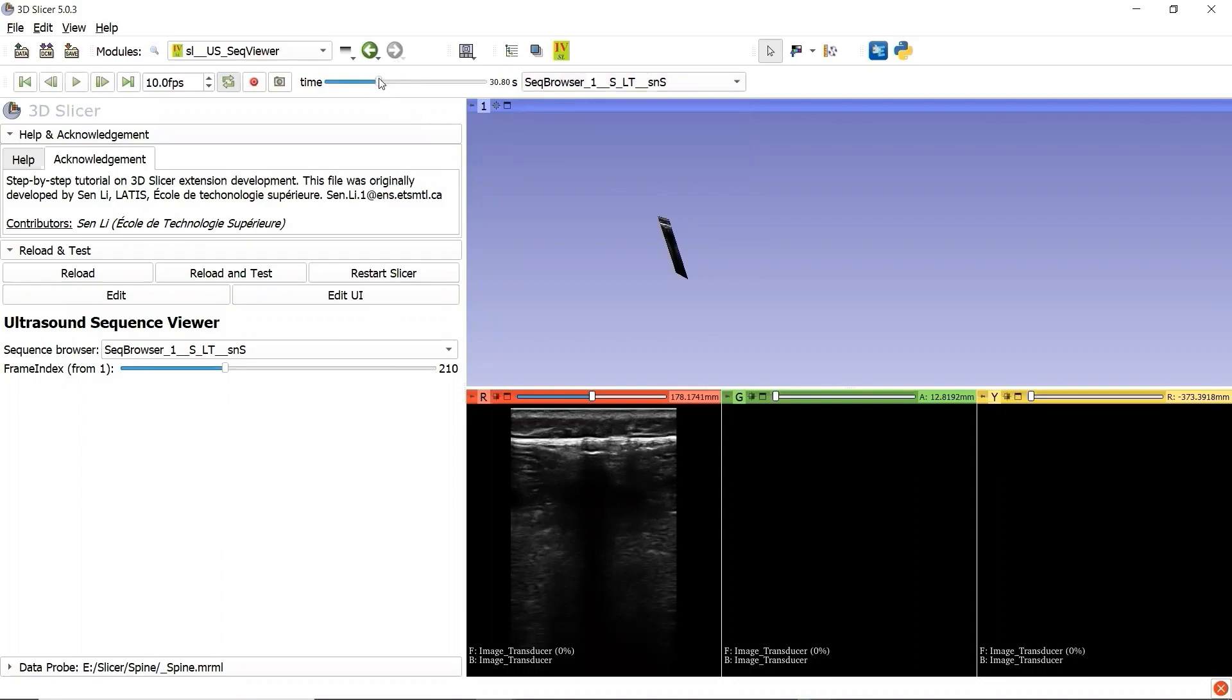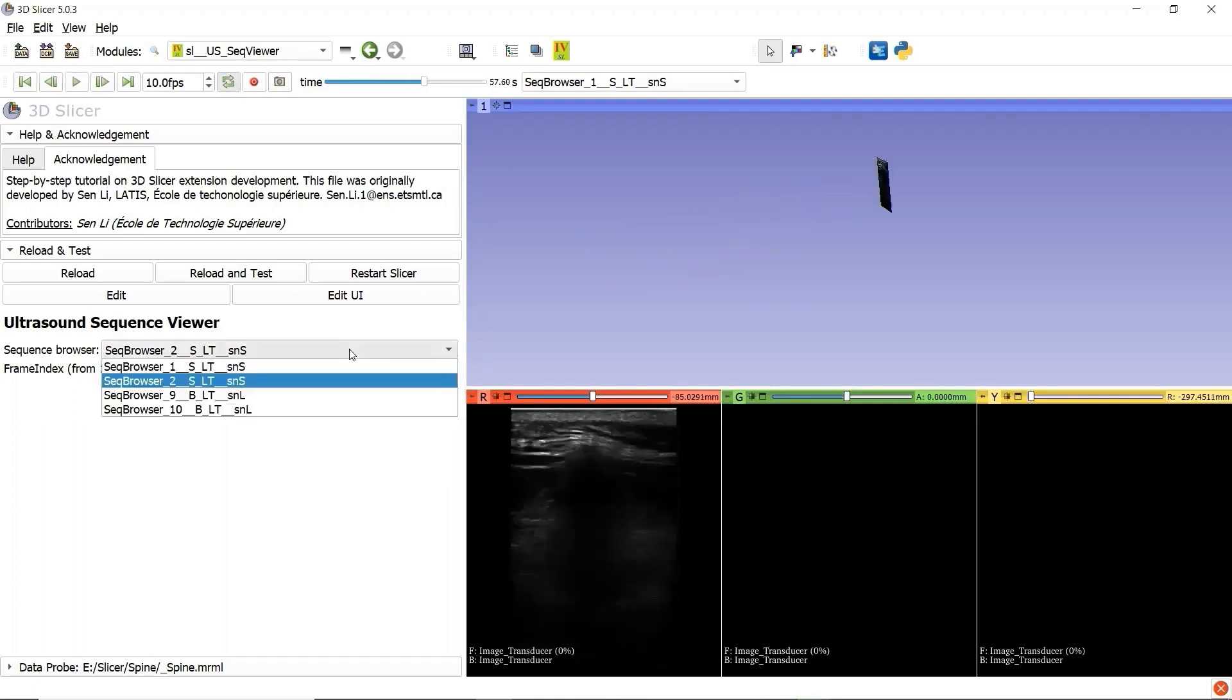Only if we slide the time slider, change the selected value of the time slider, we can observe the update of the ultrasound image. This can be a small bug of 3D slicer, and we fixed this bug by using a small trick in our custom module.